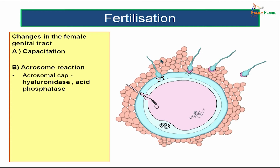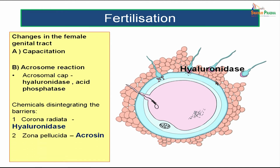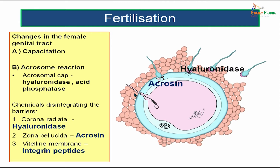The next step after capacitation is known as the acrosome reaction. During the acrosome reaction, there is hyaluronidase and acid phosphatase in the acrosomal cap of the sperm. The hyaluronidase will be acting on the corona radiata. The zona pellucida will be lysed by acrosin, and the vitelline membrane will be lysed by integrin peptides. The acrosome reaction is mainly the release of hyaluronidase from the acrosomal cap. The three chemicals disintegrating the barriers act at three levels: the corona radiata by hyaluronidase, the zona pellucida by acrosin, and the vitelline membrane by integrin peptides.